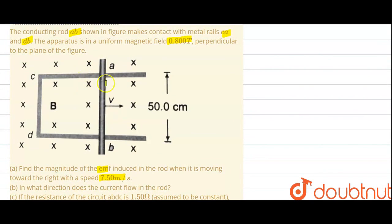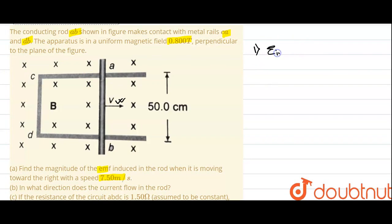As we see here, the metal rod is moving in a positive direction and the length of the rod is 0.5 meters. We need to find out the induced EMF. The magnetic field is being cut here, so EMF will be induced. The formula for induced EMF is E = BVL.